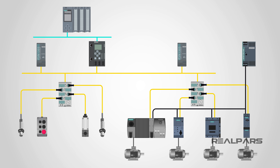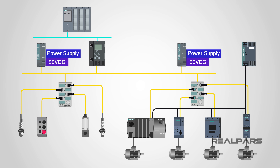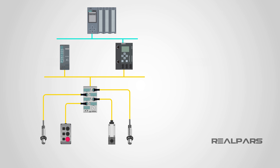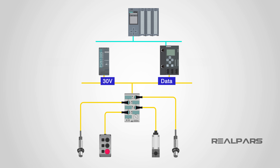Finally, we have a power supply unit. The unit provides a constant regulated 30 volts DC to supply power to the master and the slave devices. It also works as a data decoupler, which means it separates the power and data, as they are both simultaneously transferred along the cable.